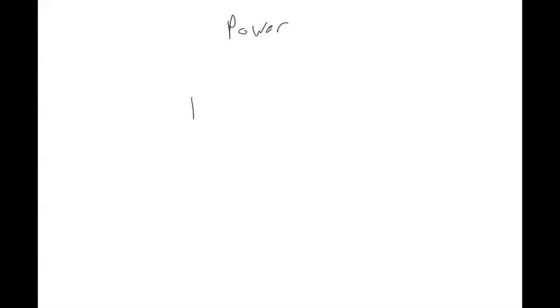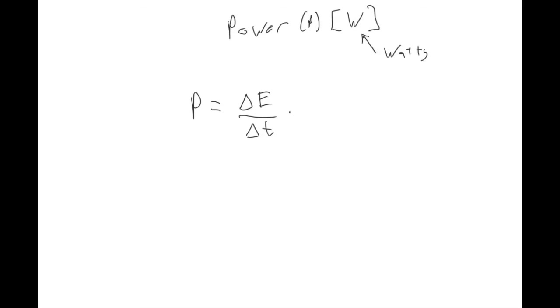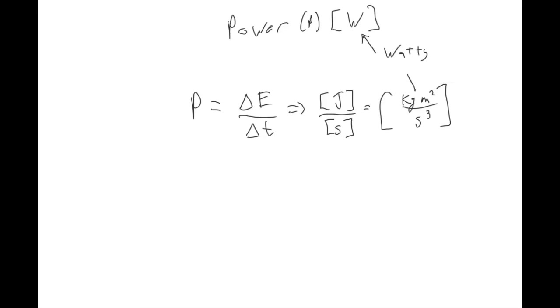One more thing: power. Power is the rate of change of energy over time. It has units of watts, and a watt is the same thing as a joule per second. Since a joule is kg·m²/s², a watt is equivalently kg·m²/s³. All of these unit forms are equivalent to each other.